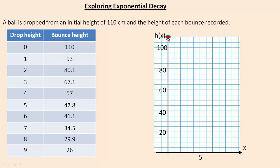So we're going to plot these just to see what it's like. There's the 110 it started at. First bounce was at 93, so we'll put a dot right there at 93, just a little bit below 95, and then 80.1, just a little bit over the 80, 67.1, 57, and I'm just plotting all these points. That's the 34.5, the 29.9, pretty close to 30, and 26.